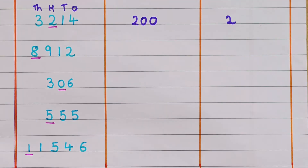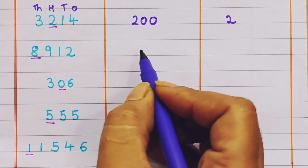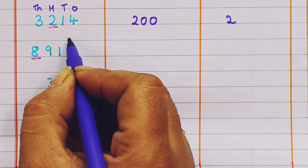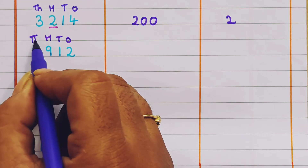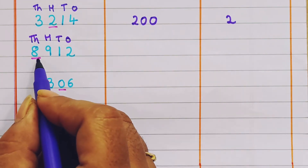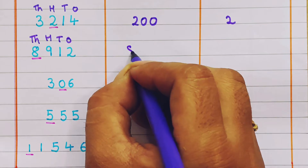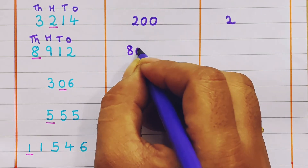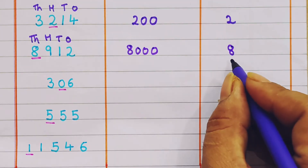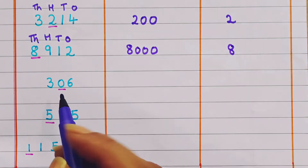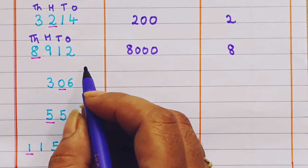Next example: 8912. Let's give the places — ones, tens, hundreds, thousands. 8 is present in the thousands place, so the place value is 8000 and the face value will be the number itself, that is 8.